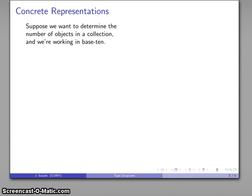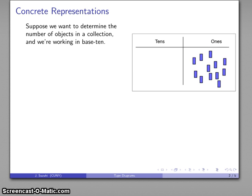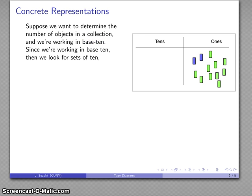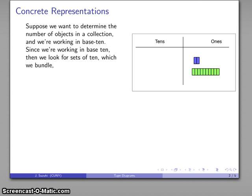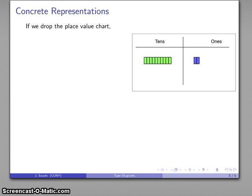Suppose we're working in base 10. If I want to determine the number of objects in a collection, I'll look for sets of 10 — there's one — and I'll bundle them. The important thing is this should not belong in the ones place; it should be over in the tens place. And I have this as my bundle and trade.